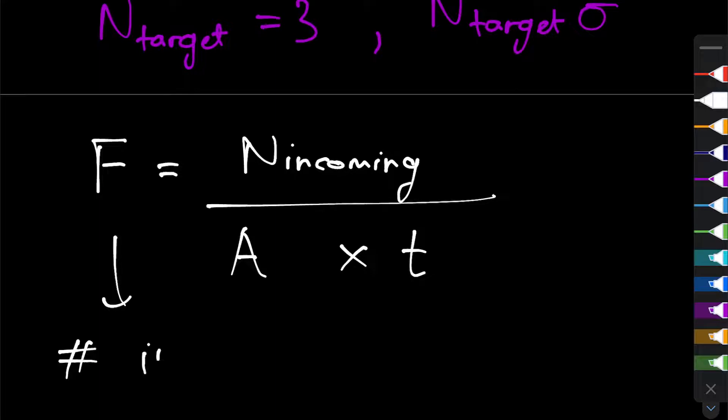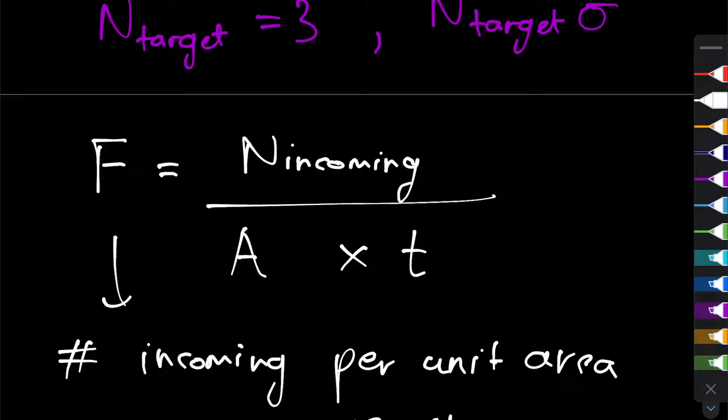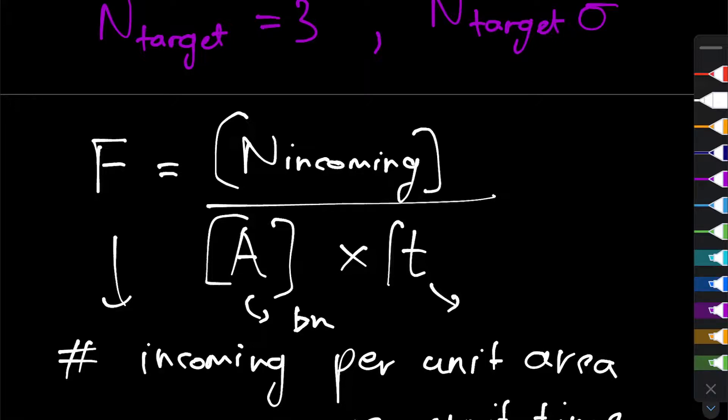So the flux is really just the number of incoming particles per unit area per second or per unit time. Consequently, because this numerator quantity is unitless, and this is measured in the units of area, we can call that barn in this case, and this is measured typically in seconds. We say that flux is measured in per barn per second.